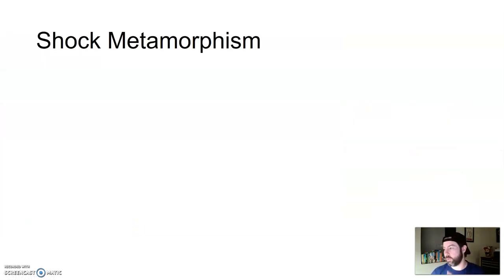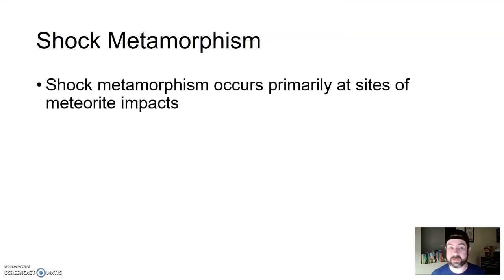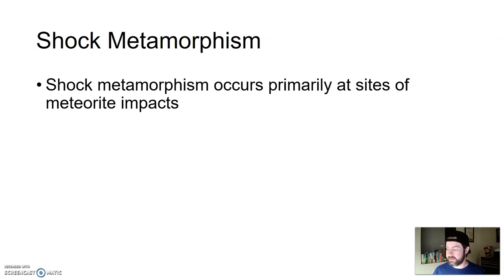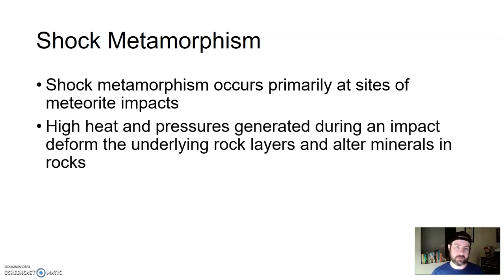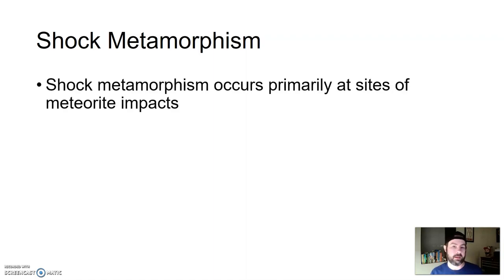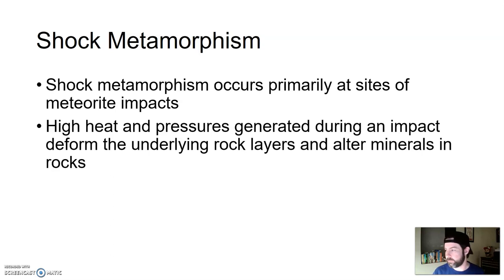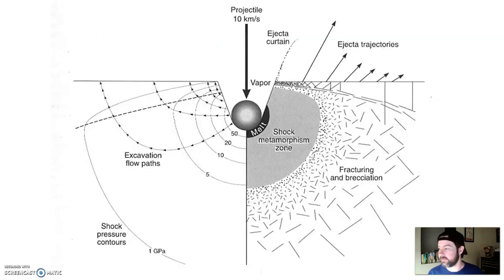And then we get into shock metamorphism — this is my favorite. It occurs primarily at sites of meteorite or large asteroid impacts. You're getting a big amount of pressure and heat in a very small localized area, just enough to cause things to alter and change. The high heat and pressures generated during the impact not only deform the underlying rock, but also alter the minerals in those rocks. So a projectile — an asteroid or meteorite — traveling very fast crashes into the earth, and the area right around it receives so much heat and pressure that you get shock metamorphism.